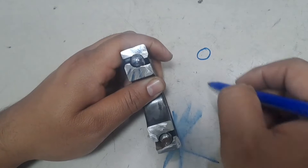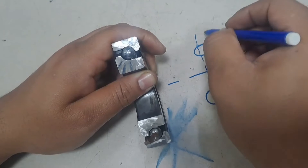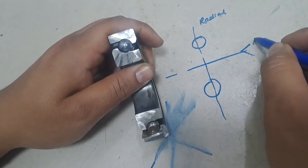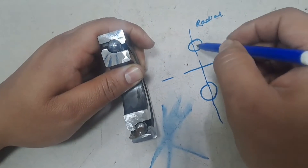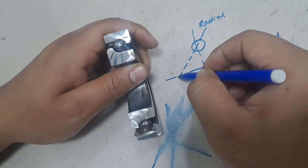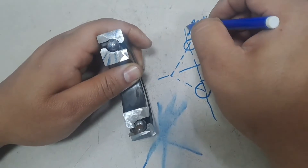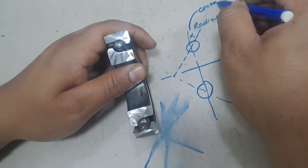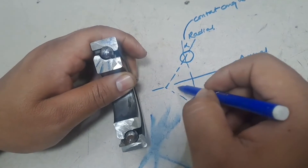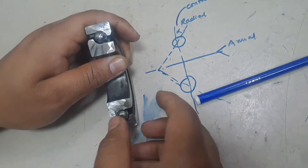I am drawing the contact angle here. There are two forces: one is perpendicular to the axis of the bearing, which is the radial force, and one is along the axis — the force acting towards the axis of the bearing is called the axial force, and the force perpendicular to it is called the radial force. The contact angle is drawn between the perpendicular line and the axis of the ball.